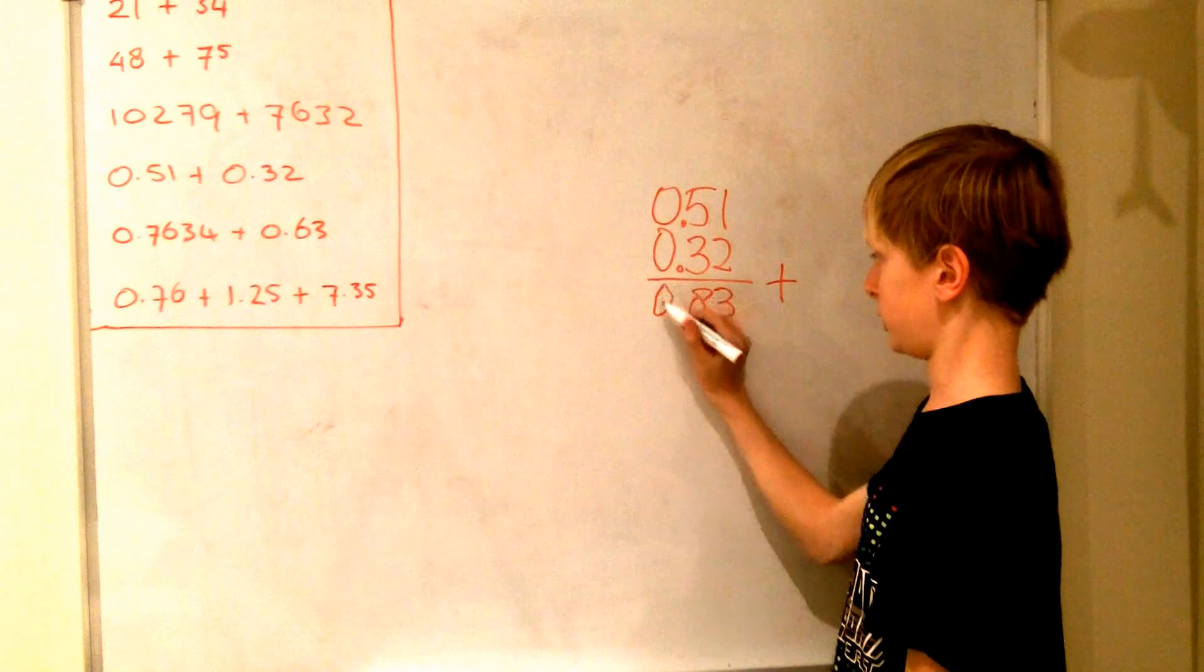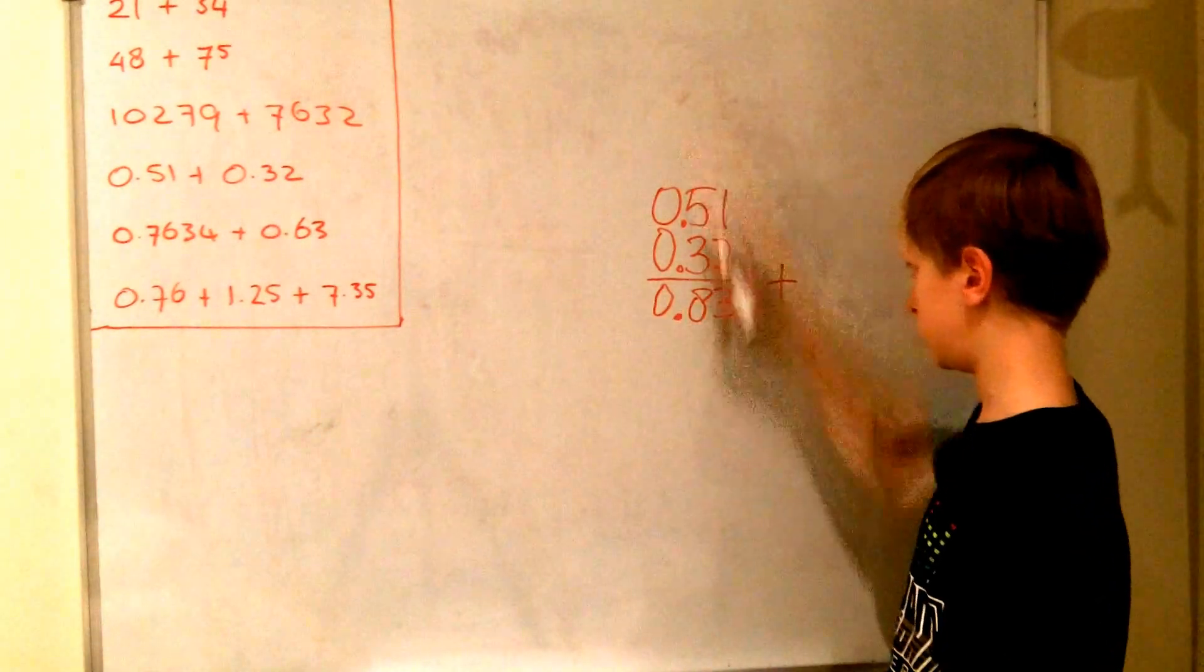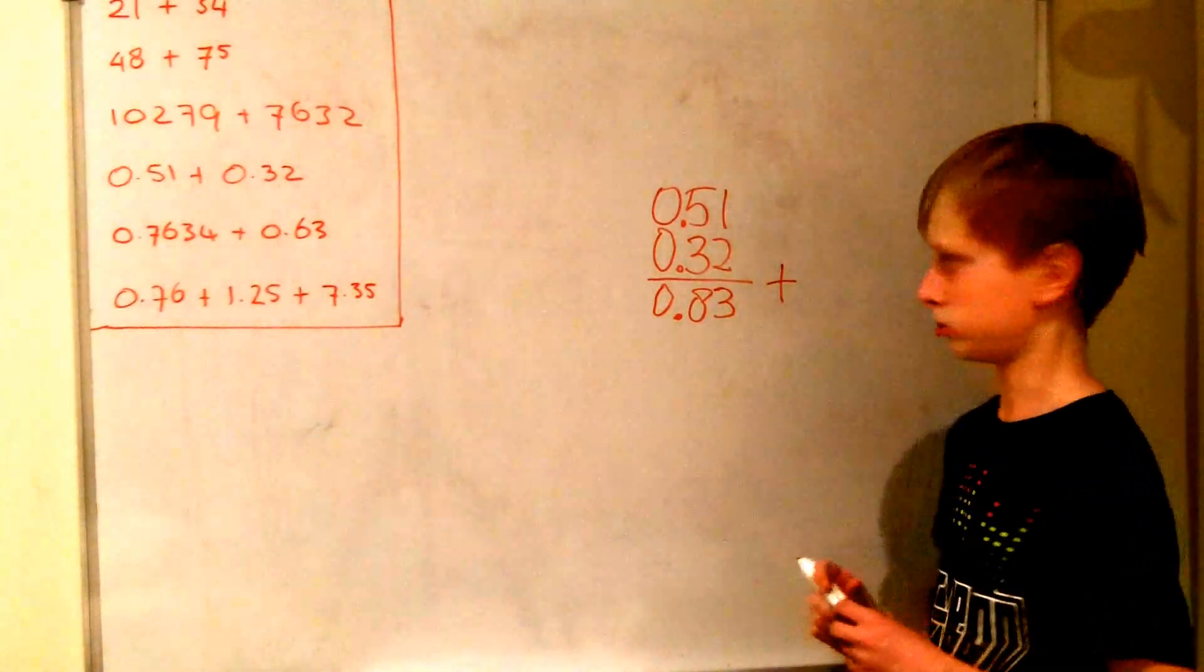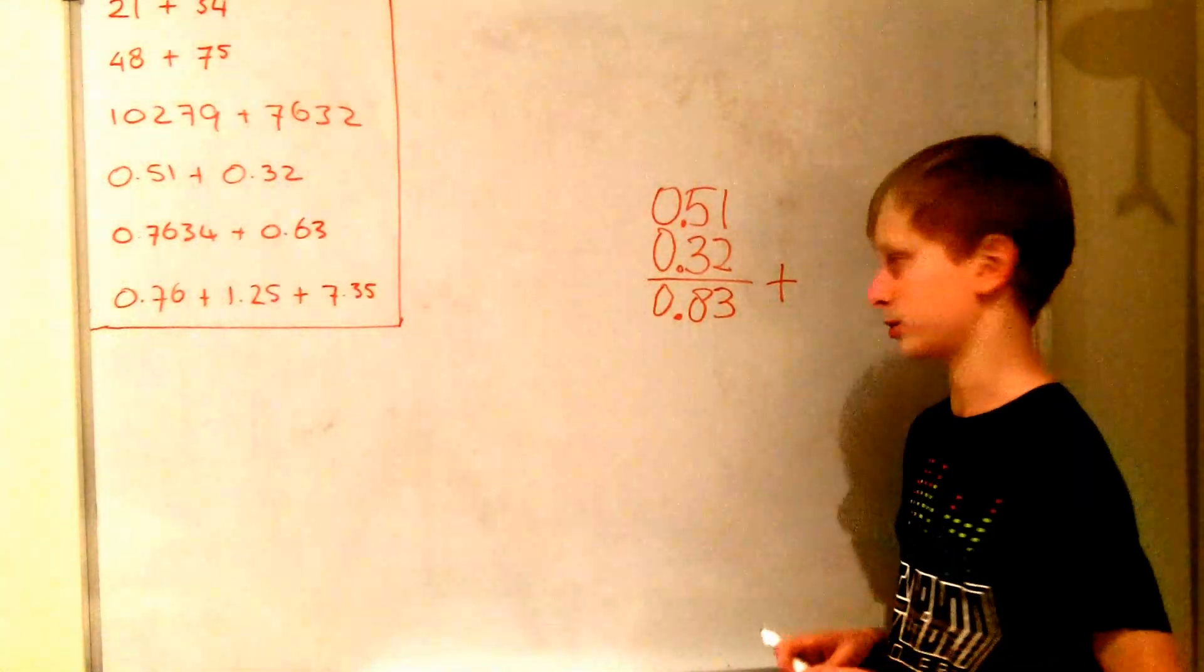And 0 and 0 is 0. And the decimal point is exactly at the same level as the others. So the answer to this question will be 0.83.